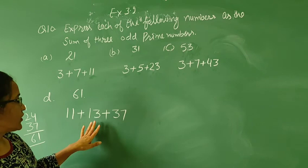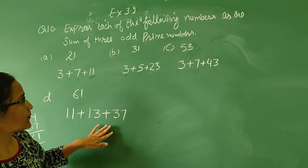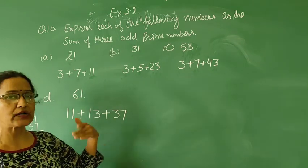This is one way to find 3 odd prime numbers. Same way, all the numbers we get.